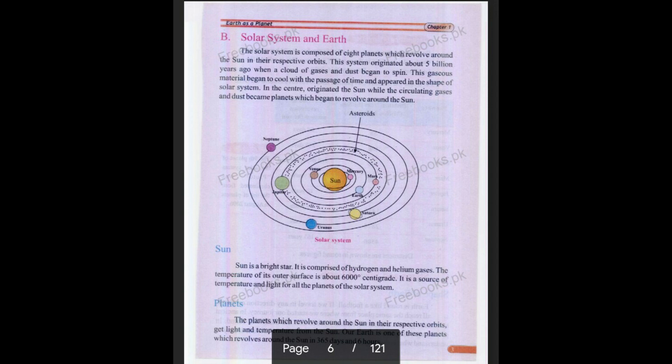All these planets are named here. Sun at the center, then first planet is Mercury, Venus, Earth, Mars, Jupiter, Saturn, Uranus, and Neptune.